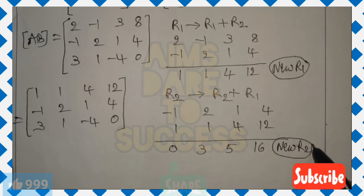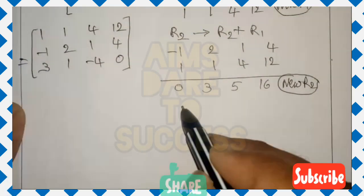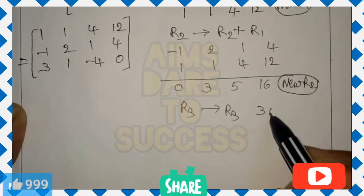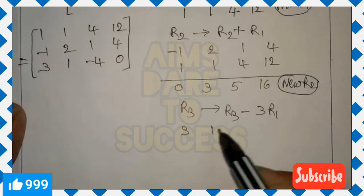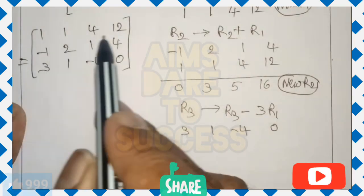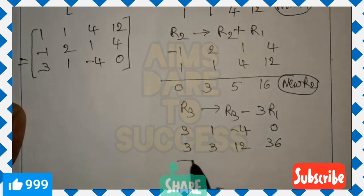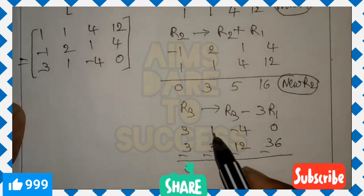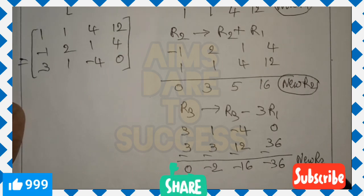Similarly, change R3 using R1. R3 gives R3 minus 3 times R1. R3 values: (3, 1, -4, 0). 3 times R1: (3, 3, 12, 36). Subtracting: 3-3=0, 1-3=-2, -4-12=-16, 0-36=-36. New R3 is (0, -2, -16, -36).